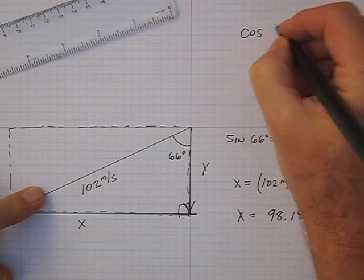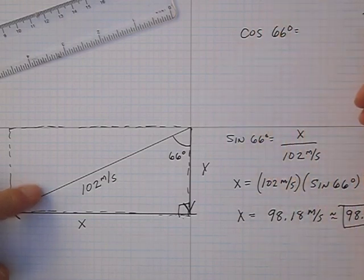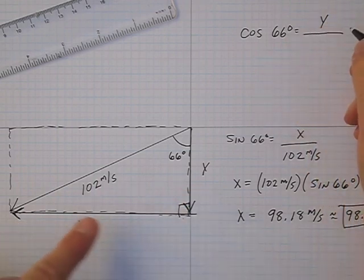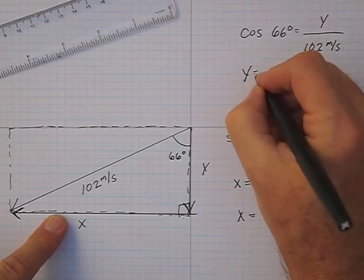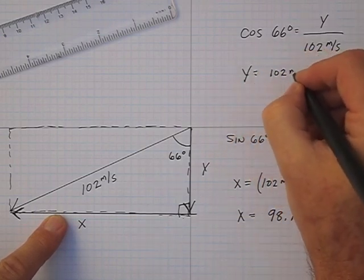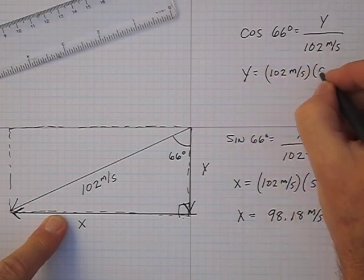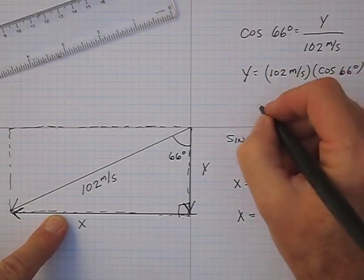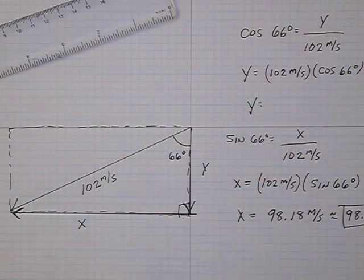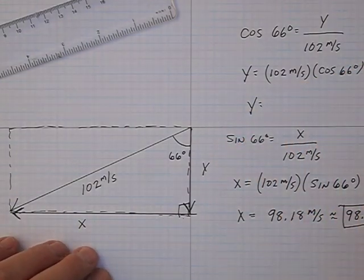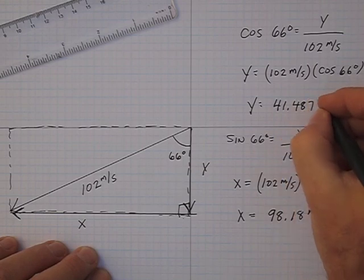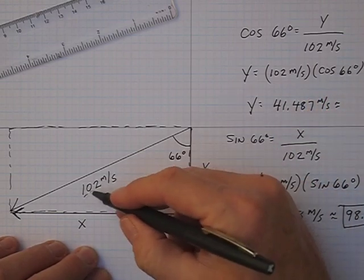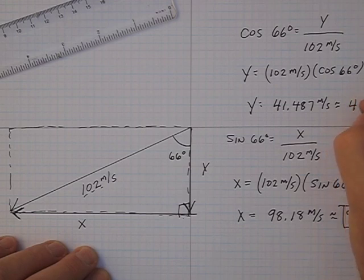So I know that cosine of 66 degrees is equal to the adjacent side, which I'll call y, over the hypotenuse which is 102 meters per second. And so y is going to be equal to 102 meters per second times the cosine of 66 degrees. And punching that into my calculator, I see that 102 times cosine 66 degrees is 41.487 meters per second. And I have three significant digits so I'm going to round that off to 41.5 meters per second.